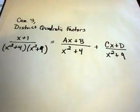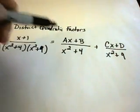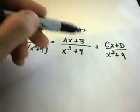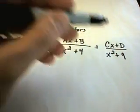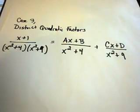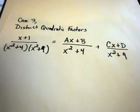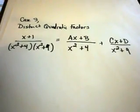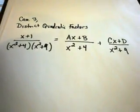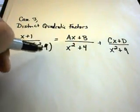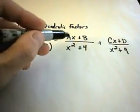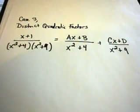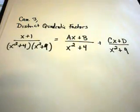In this case it's more tedious because you have to find four unknowns: A, B, C, and D. But the same idea applies — each distinct quadratic factor gets its own fraction with a generic linear expression on top.